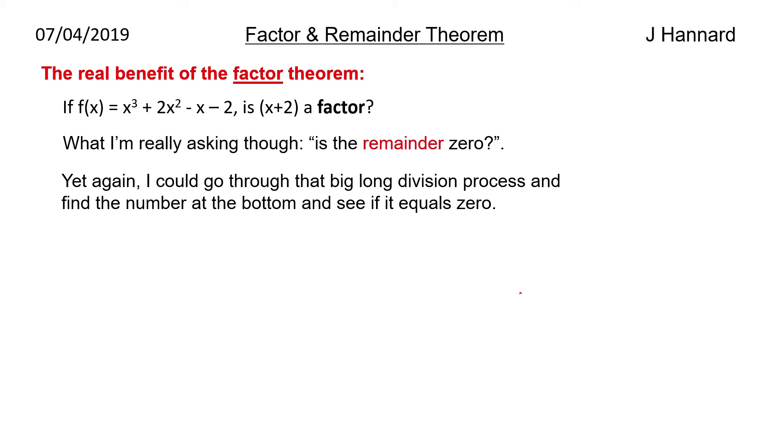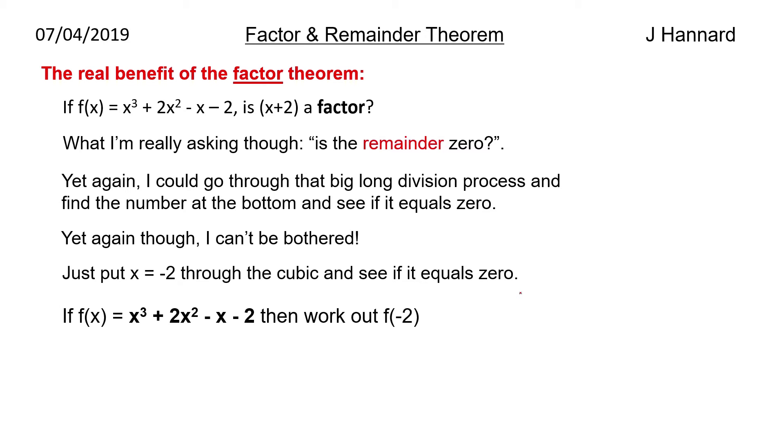Yet again, you could go through the big long division process and find the number at the bottom and see if it equals 0. Yet again though, I can't be bothered. So we just put an x equals minus 2 through the cubic and see if it equals 0. So if f of x equals x cubed plus 2x squared minus x minus 2, then work out f of minus 2. So stick a minus 2 everywhere you see an x and then work it out and you get 0. Therefore, x plus 2 is a factor.